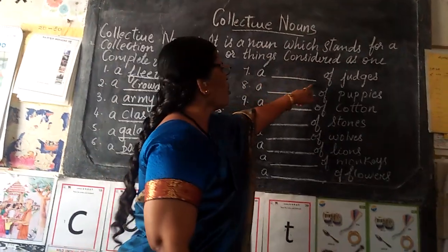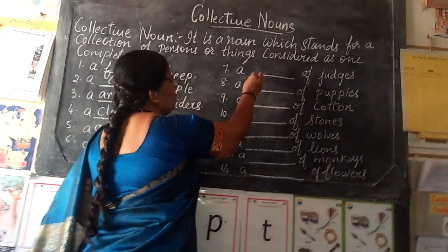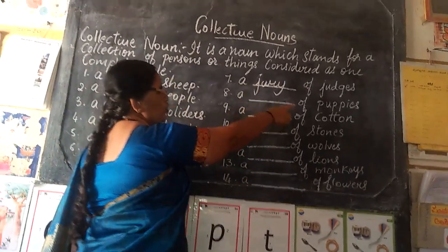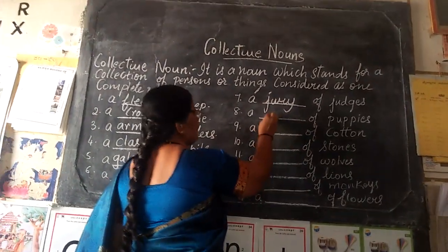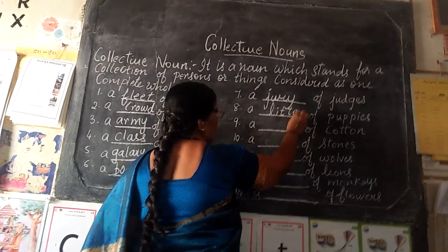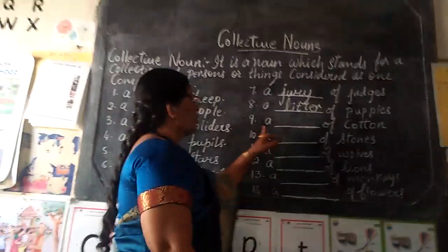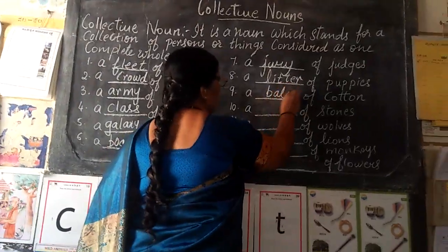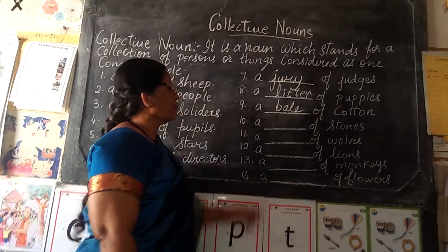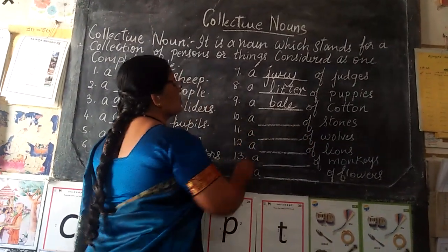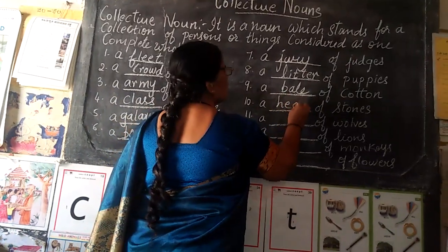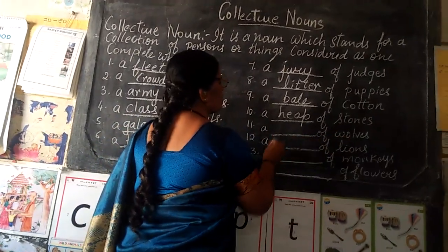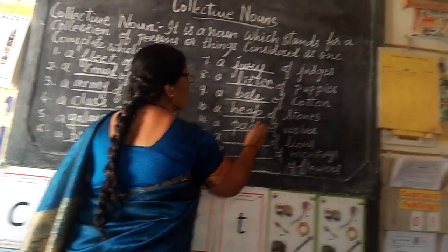A dash of judges — a jury of judges. A dash of puppies — a litter of puppies. A dash of cotton — a bale of cotton. A dash of stones — a heap of stones. A dash of wolves — a pack of wolves.